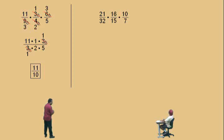21 over 32 times 16 over 15 times 10 over 7. Don't get scared. Now Charlie, just remember, just choose two numbers that you can reduce, one from the top and one from the bottom.